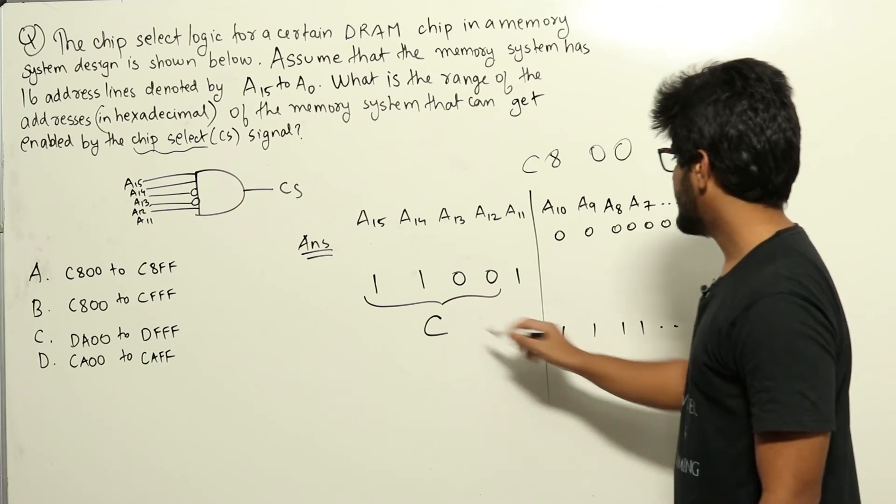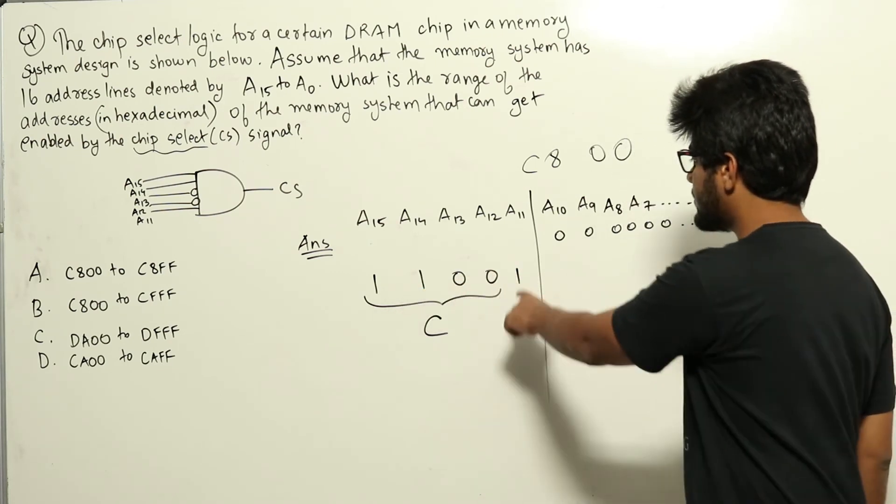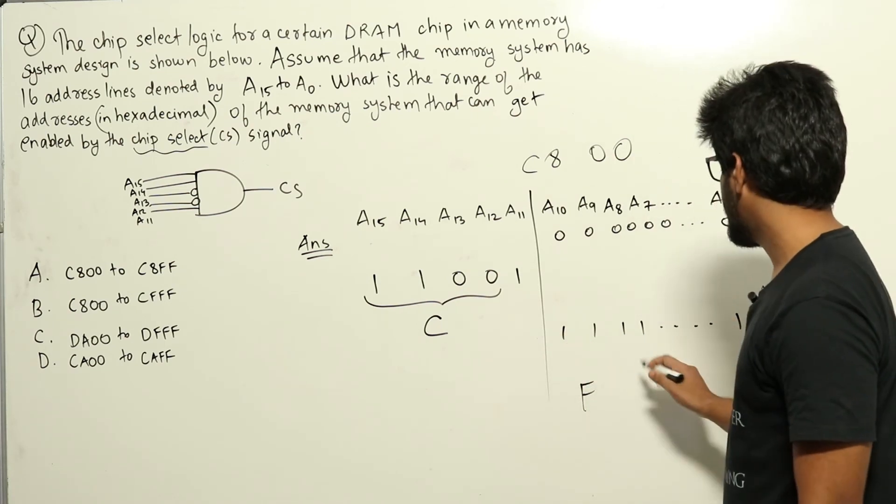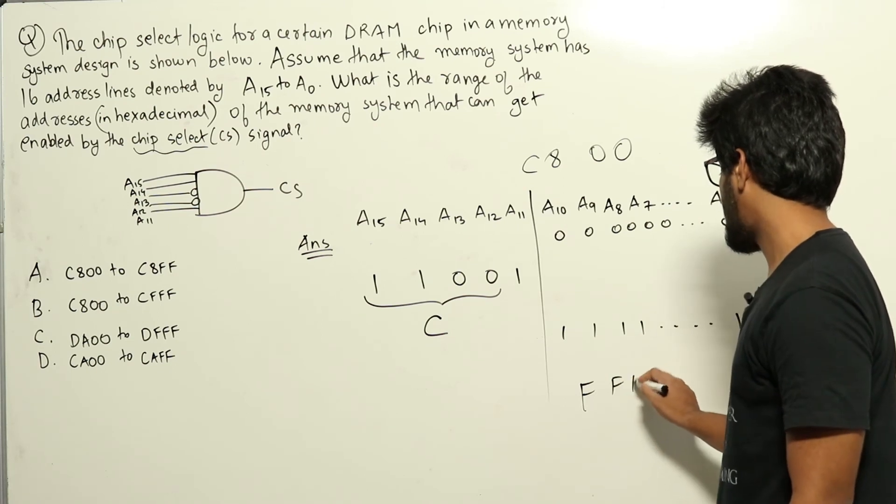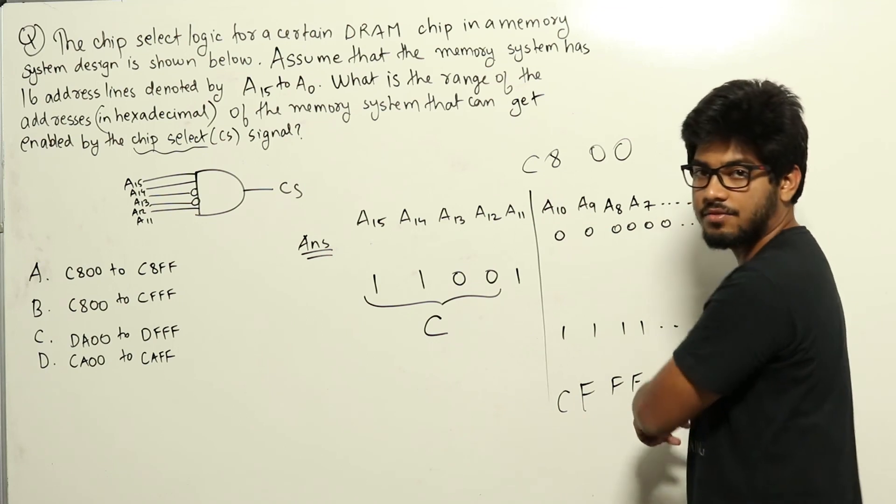The largest address will be—we keep 11001 the same, so this is C. The rest is 1111, that is F. And the next eight will be all ones, that is FF. So this signal is CFFF, so the largest address is CFFF.